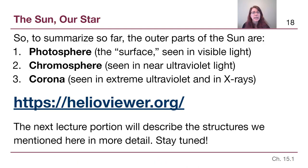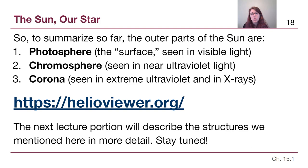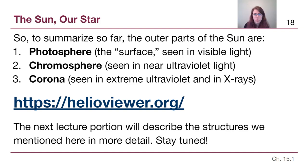Most of the pictures in these slides are from helioviewer.org, which you can access and play around with to investigate different layers of the sun in different wavelengths. The key outer layers introduced in this video are the photosphere, the chromosphere, and the corona. We talked about four structures: sunspots are seen in the photosphere; spicules are seen in the chromosphere; and active regions and coronal holes are seen in the corona. We will describe all of those in detail in a different video.